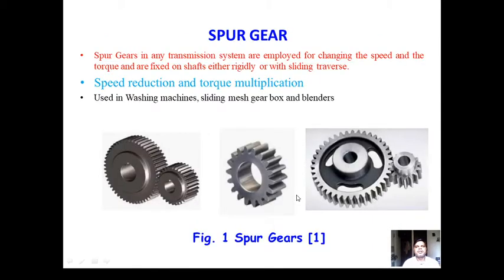The first classification is the spur gear. Spur gears are a mode of transmission employed for changing speed — for speed reduction and torque multiplication. We can obtain various gear ratios by varying the number of teeth on the driver and driven gears respectively.